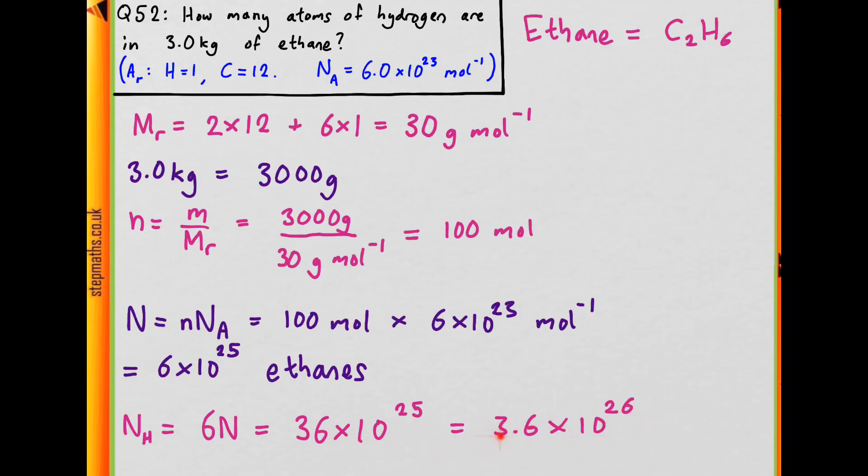And we know it's this way around because we have a bigger number times a smaller number, then a smaller number times a bigger number. So this is our final answer: we have 3.6 times 10 to the 26 atoms of hydrogen in this much ethane. So this corresponds to answer A on the question paper.